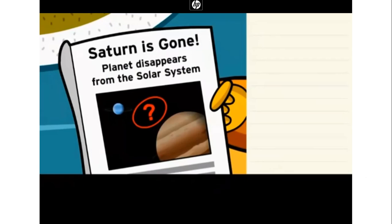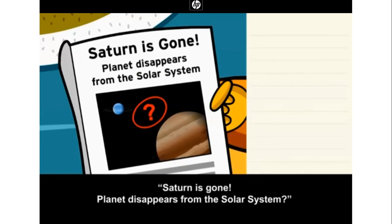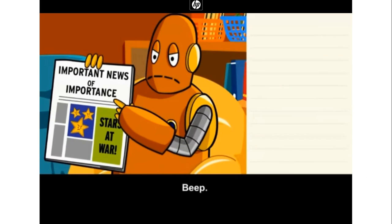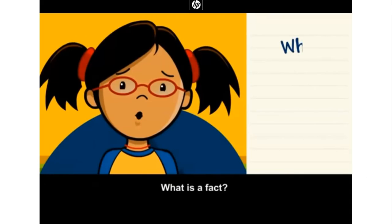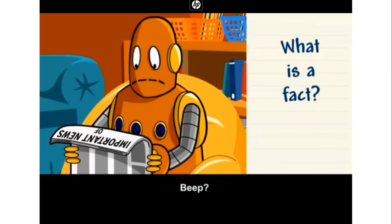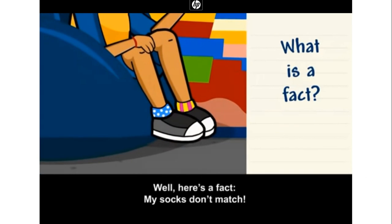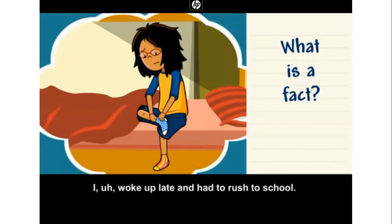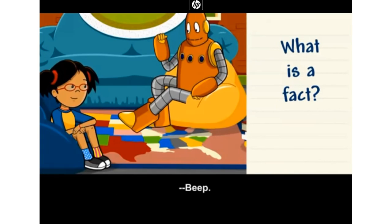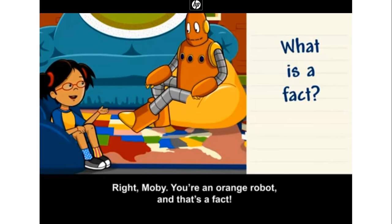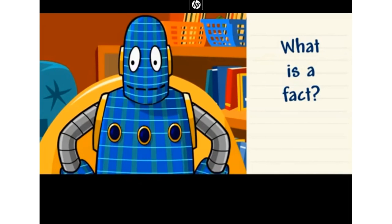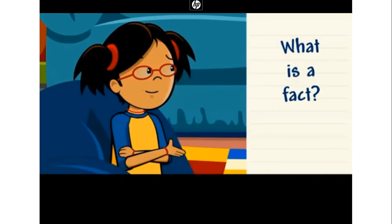From the BrainPop video: A headline reads 'Saturn is gone — planet disappears from the solar system.' That sounds a little fishy. Not everything you read is true. A fact is a statement that can be proven true. For example, my socks don't match — I woke up late and had to rush to school. You can use your observations to prove that I'm wearing different socks. See, it's a fact. You're an orange robot, Moby, and that's a fact.